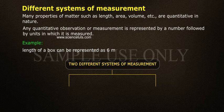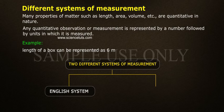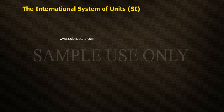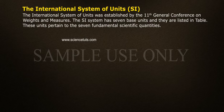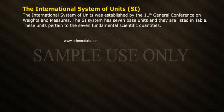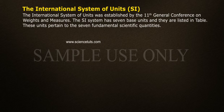The two systems are the English system and the metric system. The International System of Units, or SI, was established by the 11th General Conference on Weights and Measures. The SI system has seven base units, which are listed in a table of units pertaining to the seven fundamental scientific quantities.